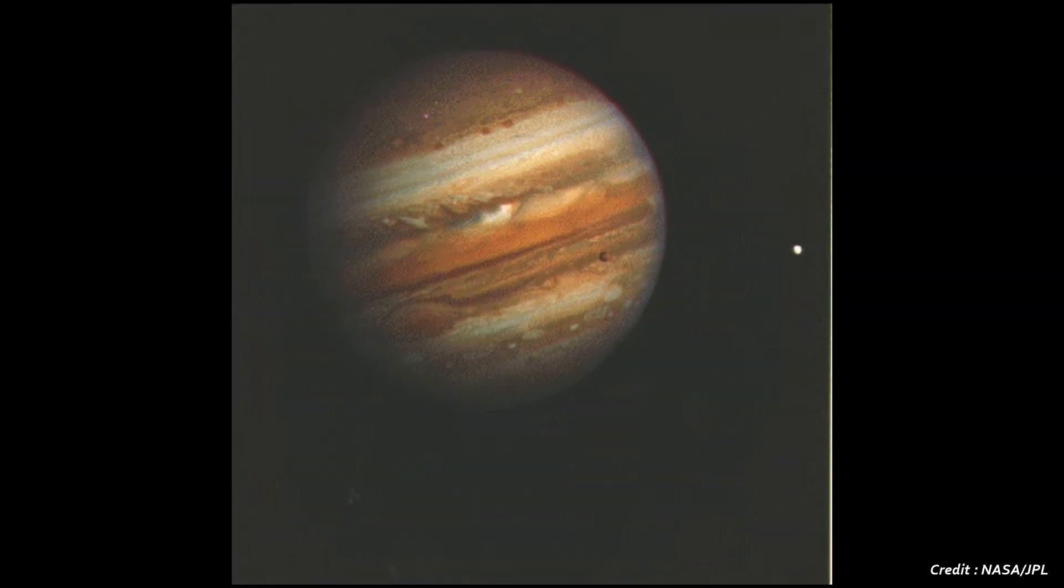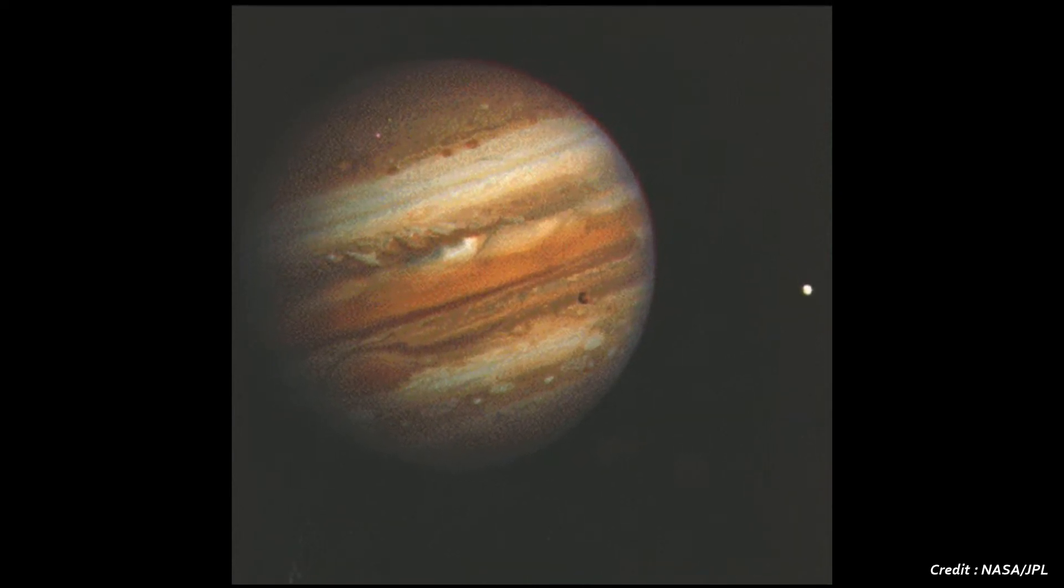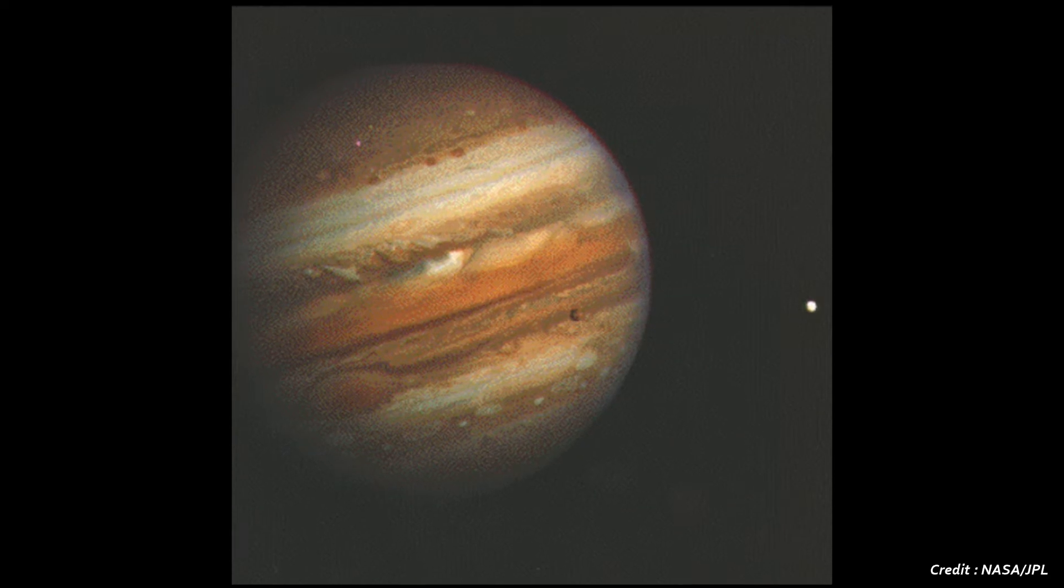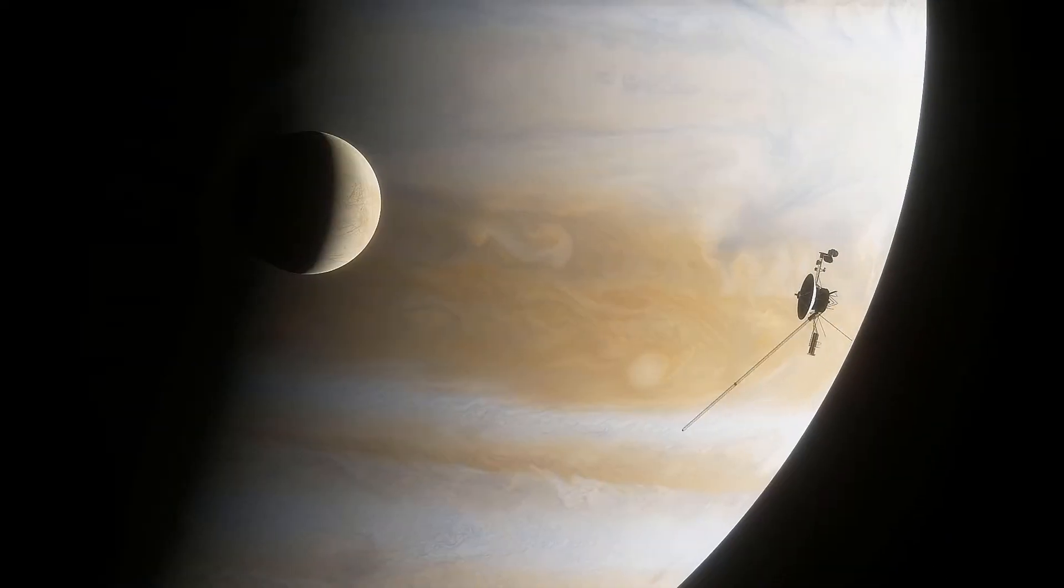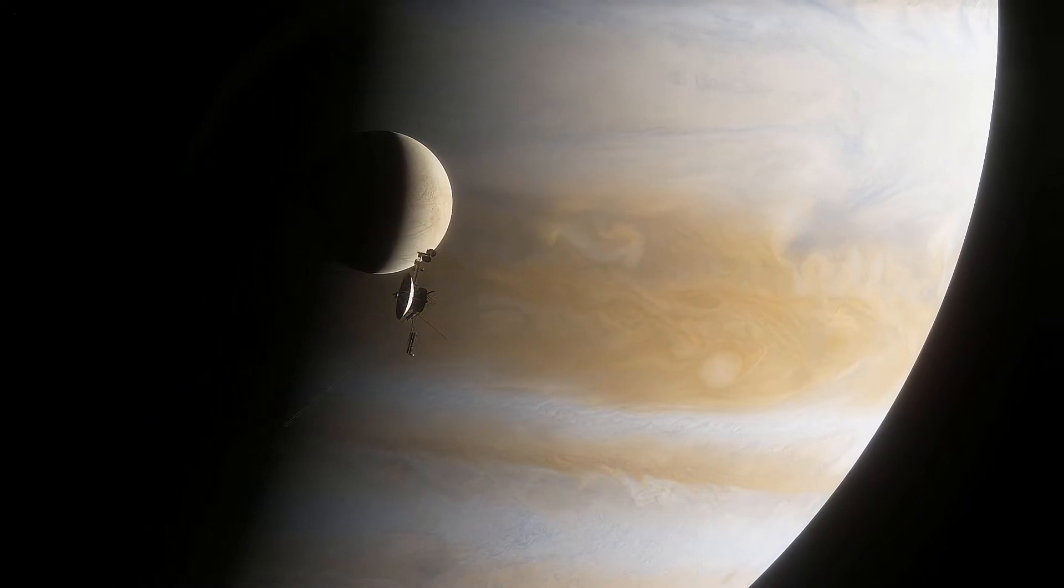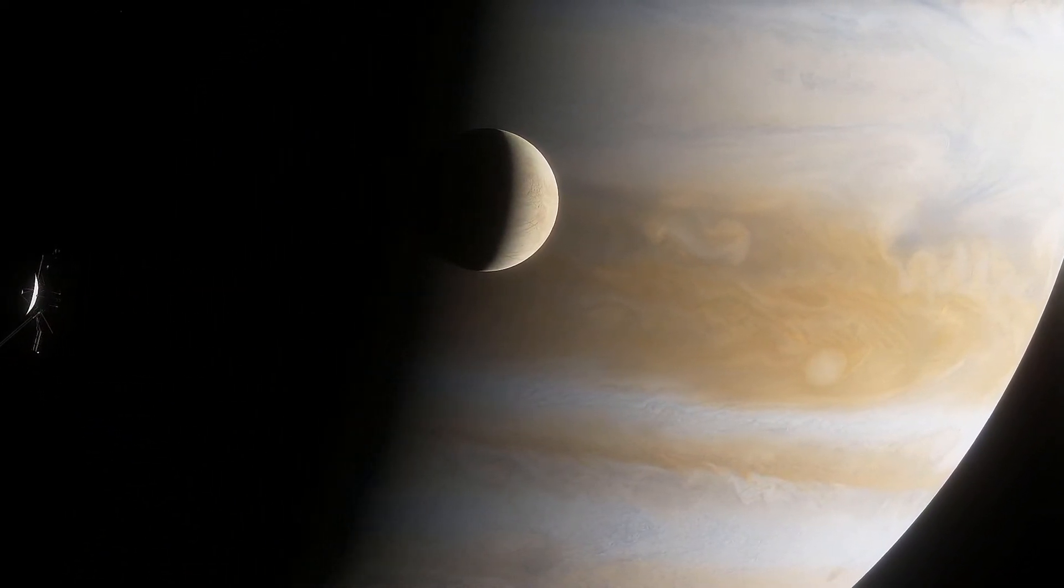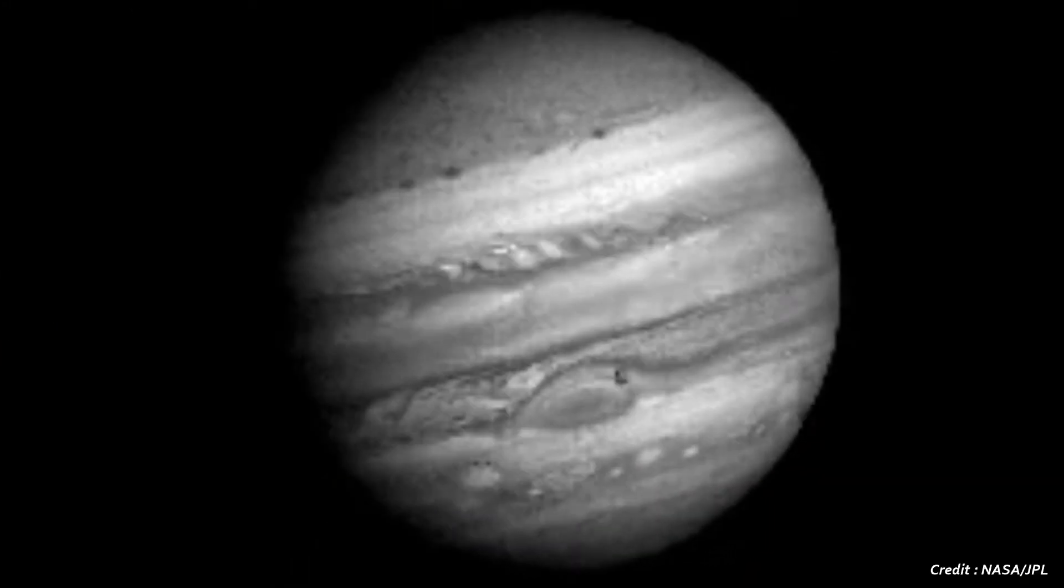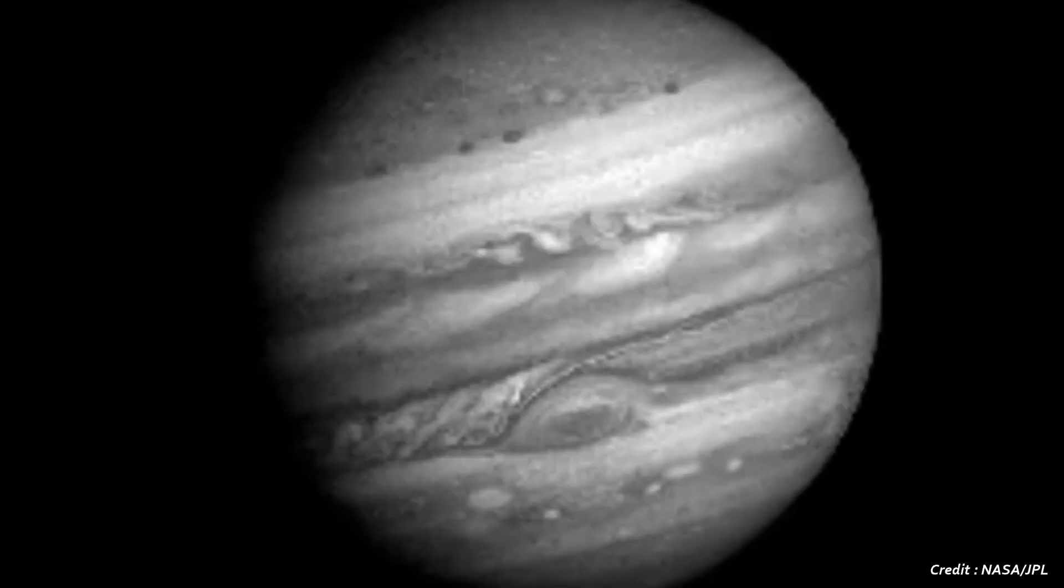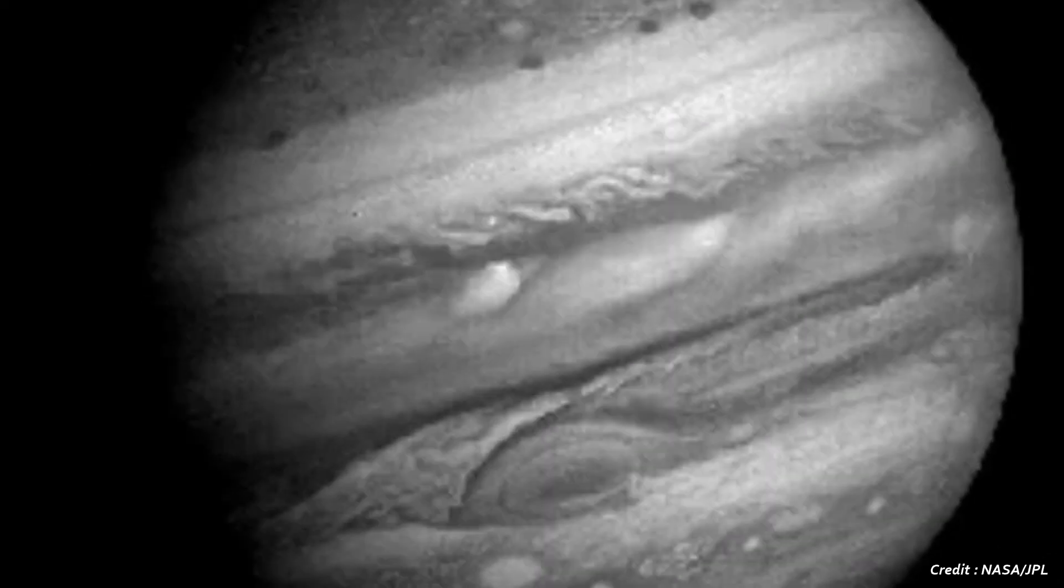Photography of Jupiter began in January 1979, when images of the brightly banded planet already exceeded the best taken from Earth. Voyager 1 completed its Jupiter encounter in early April, after taking almost 19,000 pictures and many other scientific measurements. This time lapse records Jupiter over a period of 60 days and shows the gas planet's swirling clouds rotating within bright bands.